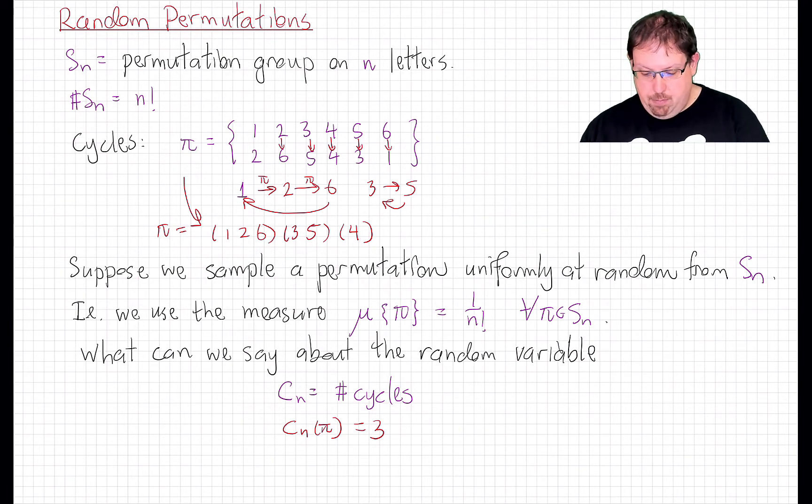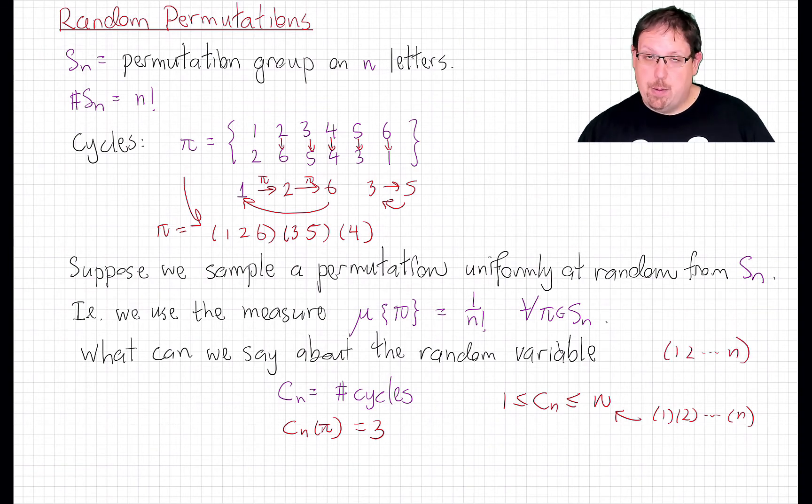There's only one permutation that has n cycles, and that's the identity permutation, which fixes all of the elements. There are lots of permutations that have only one cycle. One example would be the full cycle, which maps 1 to 2, 2 to 3, 3 to 4, all the way up to n minus 1 to n, and then n back to 1. But there are, of course, many others.